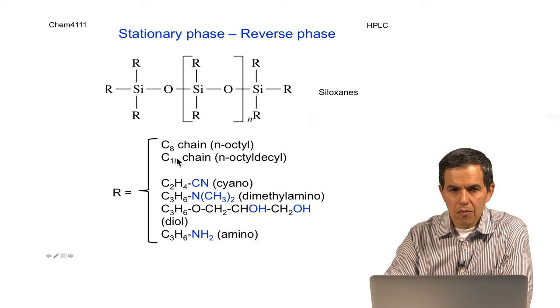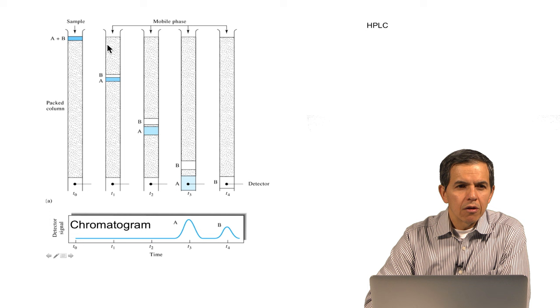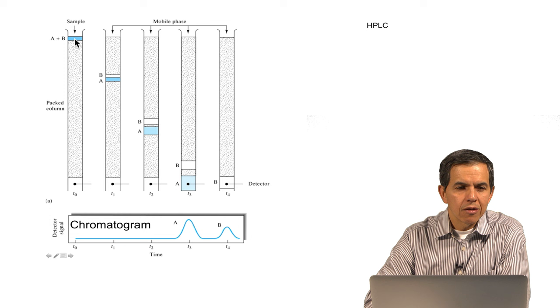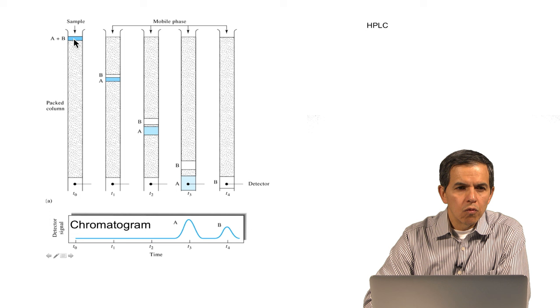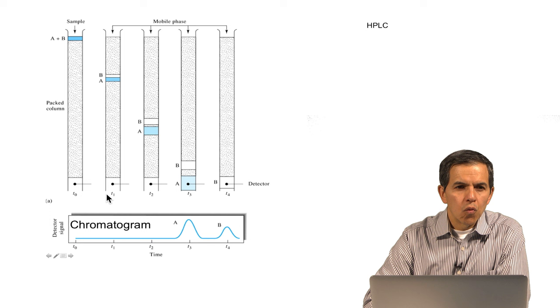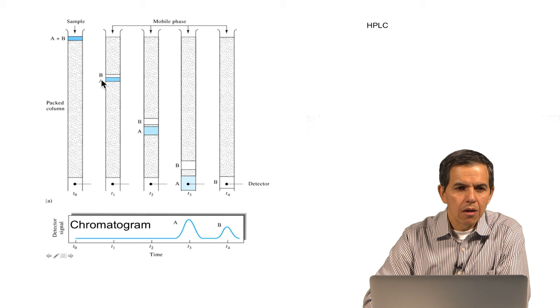This diagram illustrates the principle of separation of chromatography. A and B represent two components in the sample, which at the beginning or entry of the column occupy a single zone. As a function of time, these two will start to move down the column, carried by the mobile phase. At time zero, this is the injection time. At T1, we see that both zones A and B have moved down, and A is moving faster than B. This is under the assumption that A is not being retained, while B has the ability to partition into the stationary phase.